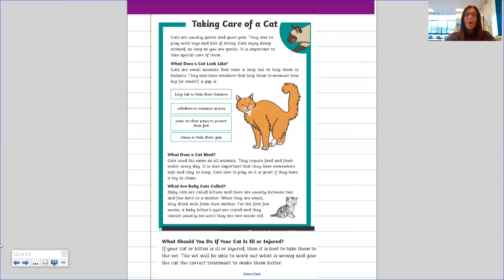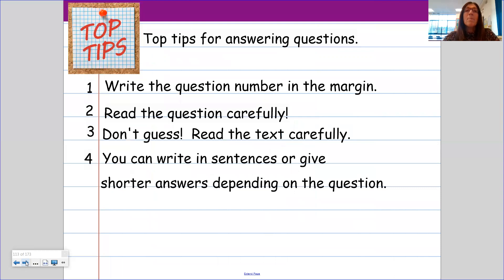So I have got some top tips to help you with answering your questions today. The first one is write the number in the margin of your home learning book. Number two is read the question carefully. Number three is don't guess the answer. Read the text carefully and find the answer in the text. And number four, you can write in sentences or give shorter answers depending on the question.